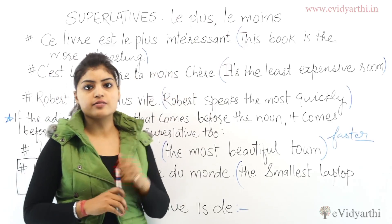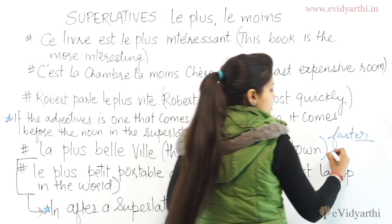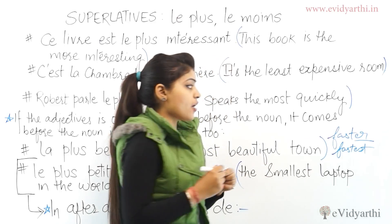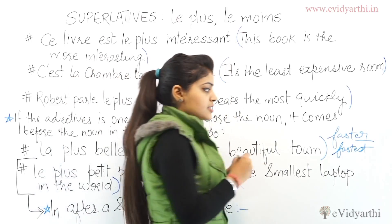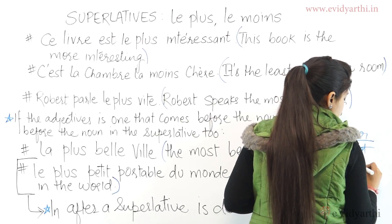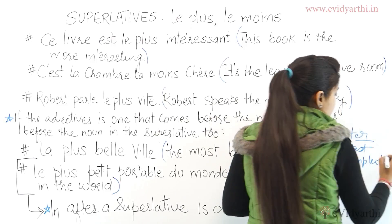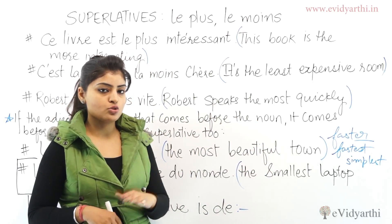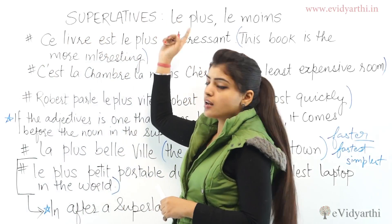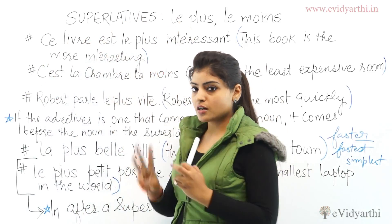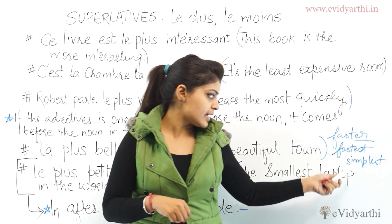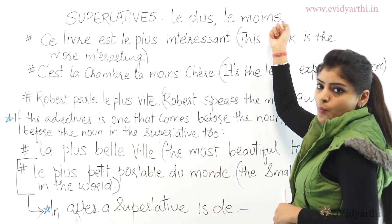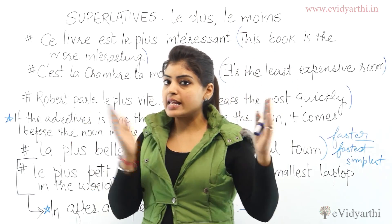Here we do the superlatives. Superlatives are the third form — for example, fastest, hardest, simplest. This third form doesn't exist in French either. We use 'les plus' and 'les moins' for the superlative, meaning 'the most' and 'the least'.